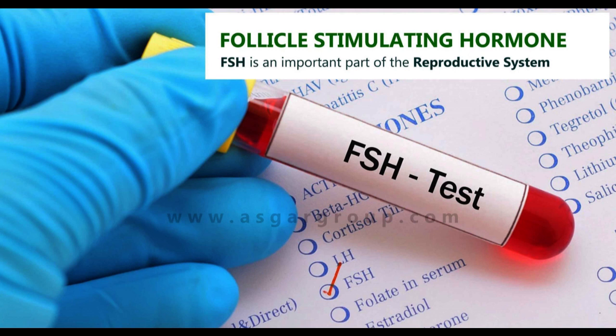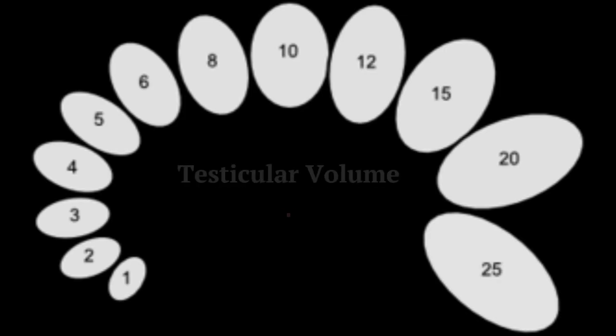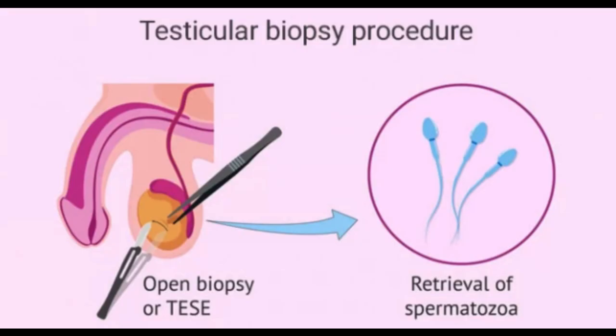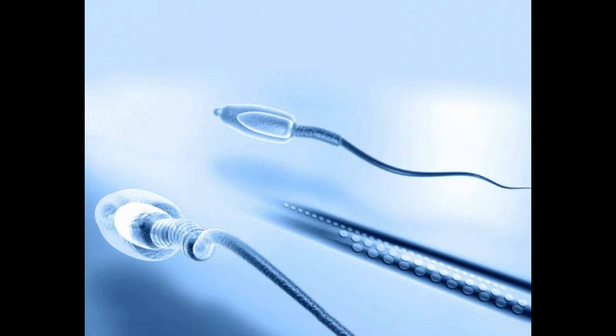To complete the evaluation for infertility, it is important that the serum follicle-stimulating hormone (FSH) and testosterone levels should be normal. Testicular volume should also be normal. A testis biopsy confirming ongoing sperm production may be helpful but is not always necessary.